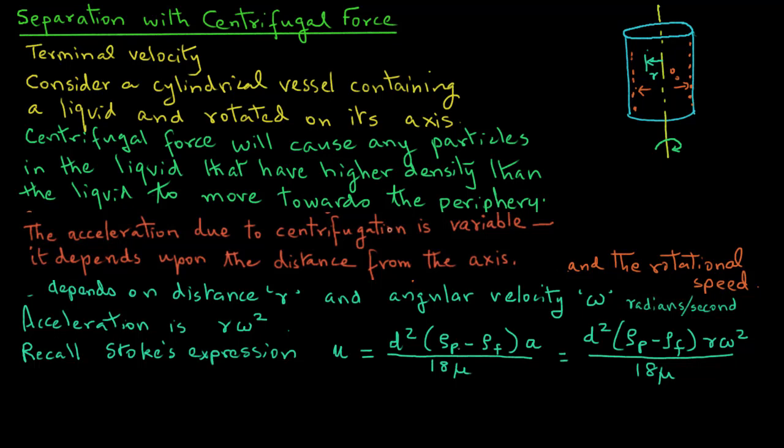Now note that the angular velocity omega can also be expressed as 2 pi times n divided by 60, where n is the rotational speed given as revolutions per minute or rpm.